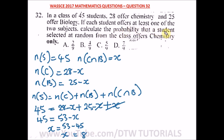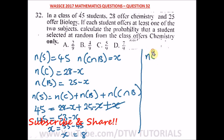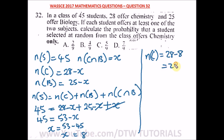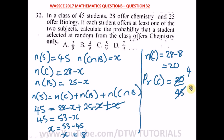Since x equals 8, the number of students offering chemistry only is 28 minus 8, which is 20. The probability that a student selected at random offers chemistry only is 20 over 45. Simplifying: 5 goes into 20 four times and into 45 nine times, giving a probability of 4 over 9. The correct answer is option B.